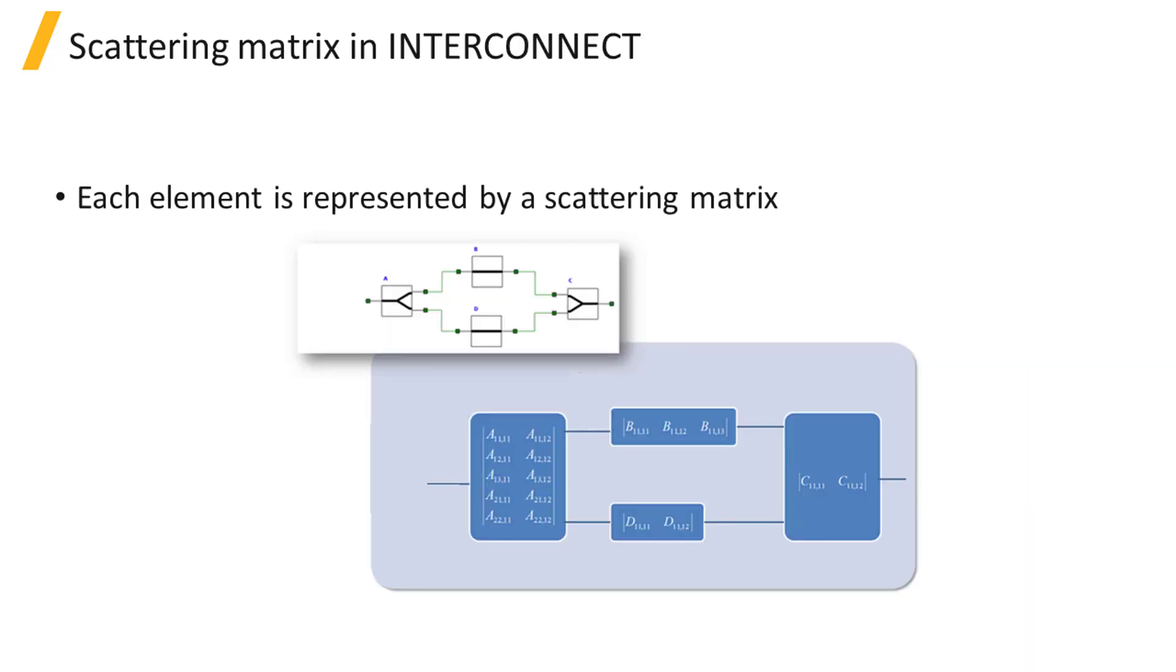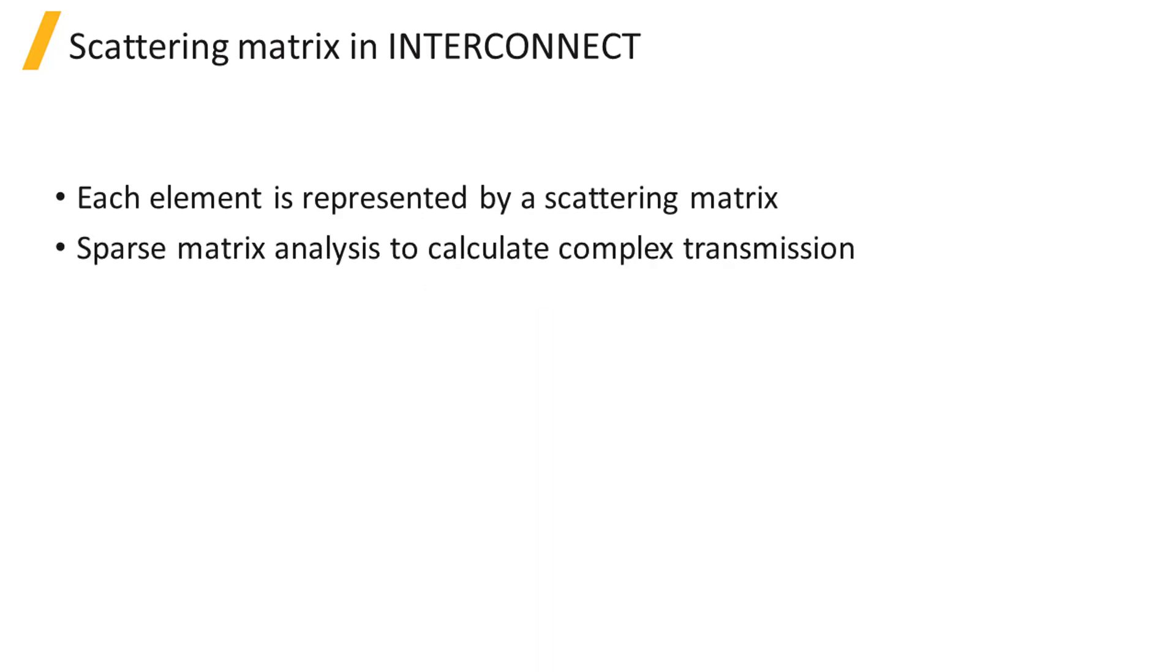Multiple elements with different S-matrices are connected to form circuits. In the example shown here, matrices A, B, C, and D represent the scattering of four circuit elements. The S-parameter simulator implements a sparse matrix analysis to calculate the complex transmission of the full circuit.